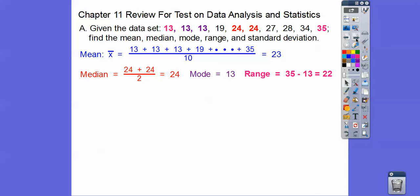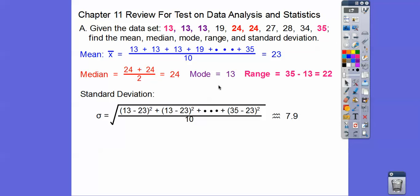The standard deviation is the square root of each number minus the mean, squared. So you take each of the 10 numbers minus 23, squared, add them all up, divide by 10, then take the square root of all of that, and you get about 7.9. That's the standard deviation.